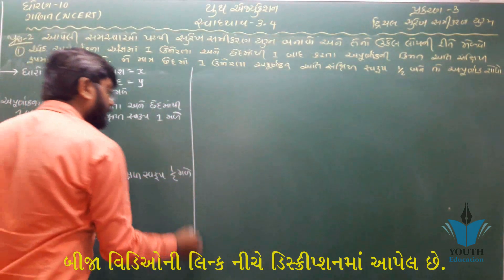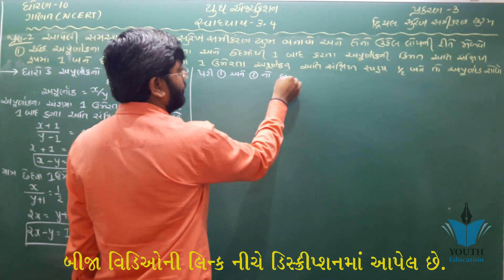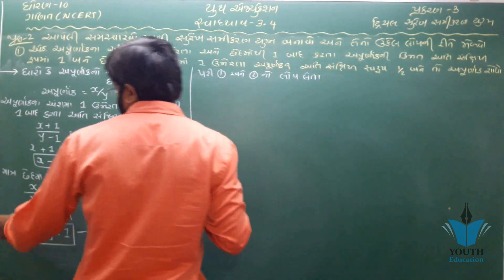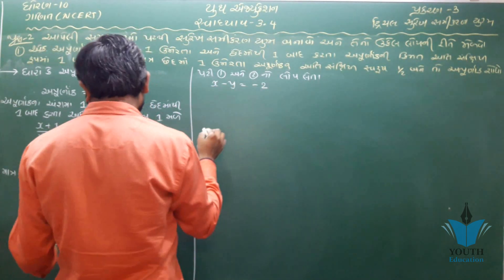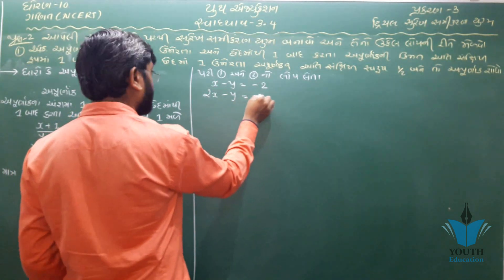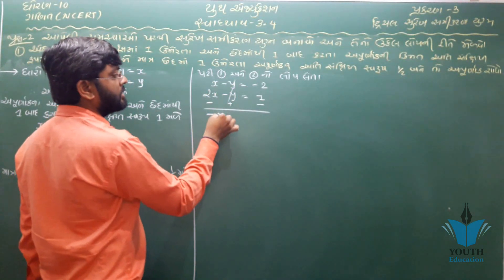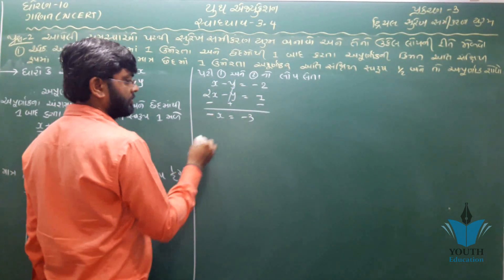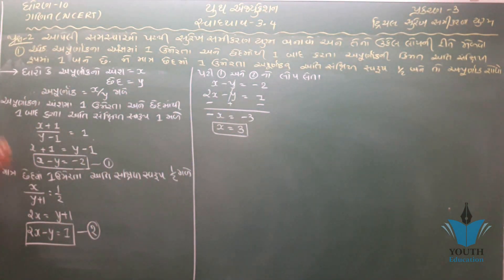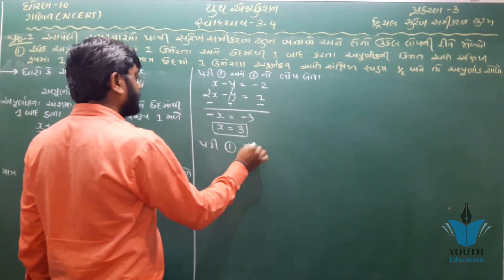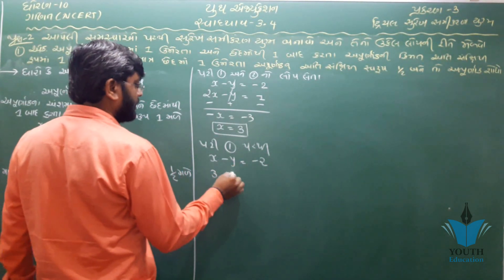આ બે સમીકરણ ઉકેલવાના છે. x ના ગુણાંક સરખા ન હોવાથી y જોઈએ. 2x માંથી x, 2 − 1 = 1, −2 − 1 = −3, તો x ની કિંમત 3 મળી. x − y = −2 માં x = 3 મૂકતા 3 − y = −2, y = 5. [Solving the simultaneous equations: x = 3, y = 5.]